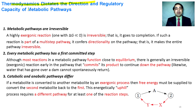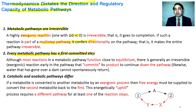Thermodynamics dictates the direction and regulatory capacity of a metabolic pathway. Metabolic pathways are irreversible, which determines the direction of a reaction. Irreversible reactions are usually exergonic with a ΔG value less than zero; they release energy when they occur, so they cannot be reversed without the provision of energy, thus determining the directionality of a metabolic reaction. Every metabolic pathway has a first committed step — among the early steps there is one exergonic step that determines the pathway direction, and this is called the committed step.